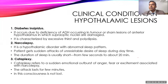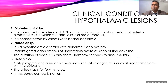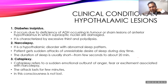Narcolepsy is an abnormal sleep pattern that occurs with hypothalamic damage — the patient has an irresistible desire to sleep, with sudden uncontrollable sleep attacks lasting from a few seconds up to twenty minutes. Cataplexy is a sudden outburst of emotions such as anger, fear, or excitement that occurs along with narcolepsy, lasting a few minutes, without loss of consciousness. That covers all the topics regarding the hypothalamus.